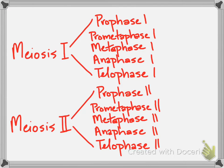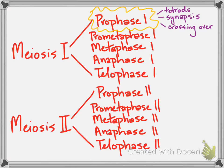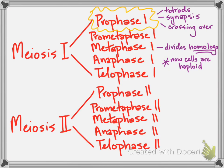The biggest difference between the two processes is definitely happening during prophase one. You're going to want to look out for the terms tetrad, synapsis, and crossing over, along with chiasmata when talking about prophase one. You're going to want to watch out that metaphase one divides the homologues, taking a diploid cell down to a haploid cell — so everything from that point on is haploid.